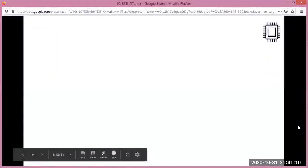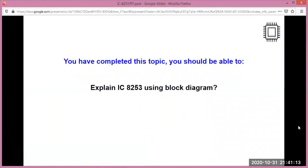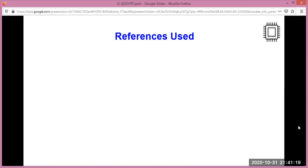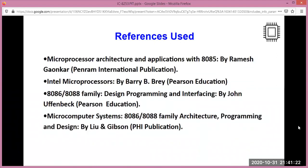By the end of this video, you would be able to explain IC 8253 using block diagram. The references used for this video lecture were Microprocessor Architecture and Applications with 8085 by Ramesh Gaonkar, Intel Microprocessors by Barry Bray, 8086-8088 Family Design Programming and Interfacing by John Uffenbeck, Microcomputer System 8086-8088 Family Architecture Programming and Design by Liu and Gibson. Thank you for watching this video.